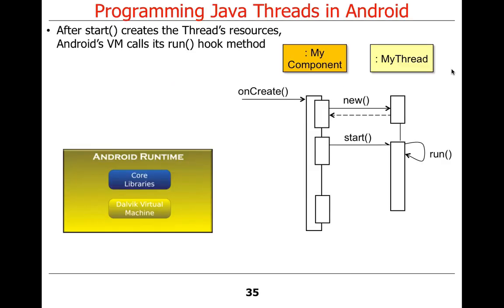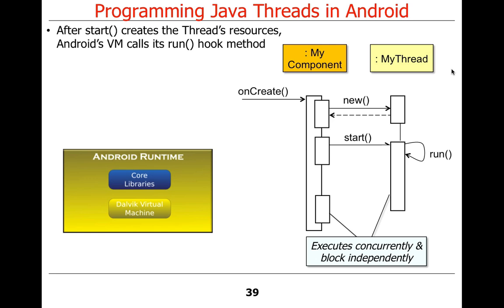Regardless of whether we use a named class extending Thread, a named Runnable, or an anonymous Runnable passed to a Thread, when you create a thread and start it, some magic happens under the hood done by Android's runtime libraries in conjunction with the virtual machine and Linux. What happens is: you say 'new', make a new thread, call start — that allocates a new stack of activation records — then run is called and the thread starts executing. Once you call start, the thread that runs in run executes concurrently with whoever called start.